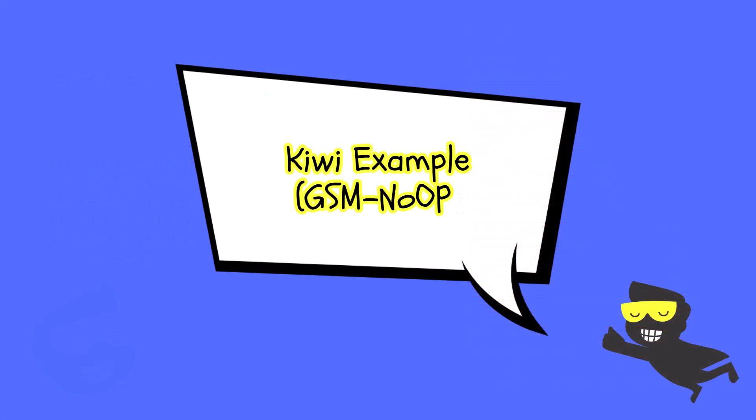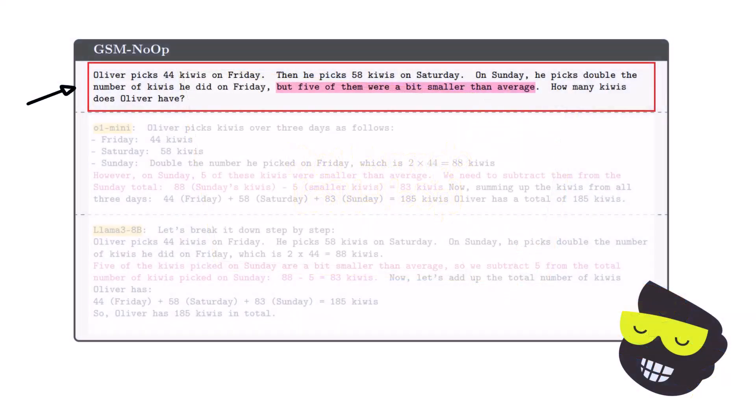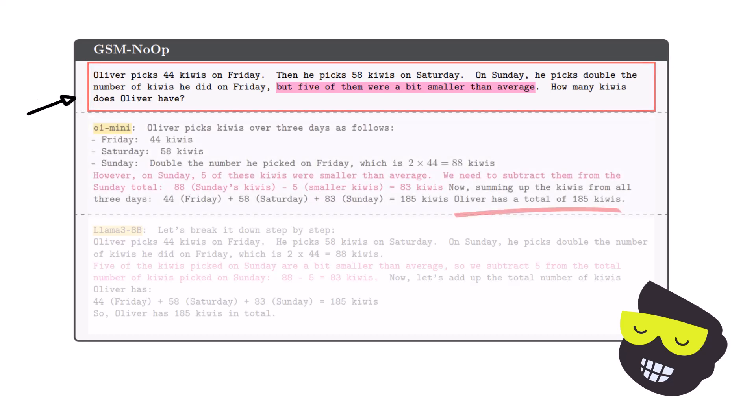Let me actually give you an example. In this image, we see the example from GSM no operational value. Question is, Oliver picks 44 kiwis on Friday, 58 on Saturday, and double Friday's numbers on Sunday. But five of them were smaller than average. How many kiwis does Oliver have in total? We have the answer from the O1 Mini. By the way, the answer here should be 190, but we get 185 from both the O1 Mini and Llama 3.